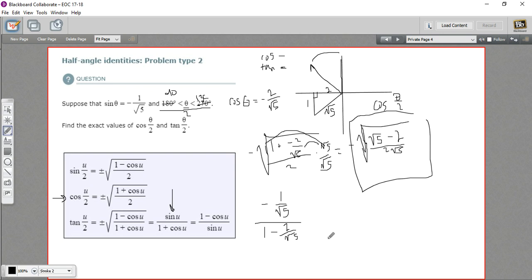And let's see. I think we can simplify this one again by multiplying by square root of 5 over the square root of 5. On top, that just gives us negative 1. On the bottom, that gives us the square root of 5 minus 2. And that looks pretty darn simple. So I think we'll call it there. So that is some more work with the half angle identities.